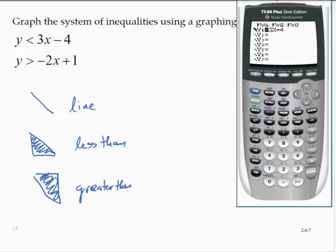All right, so that next option shows a thicker line. That's the greater than. That's the less than. So I want a less than for the y1.